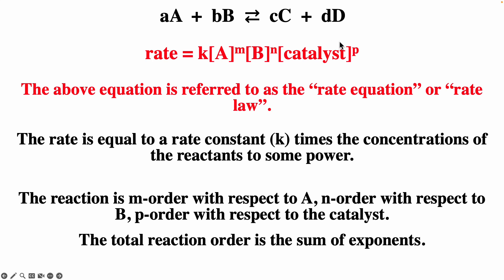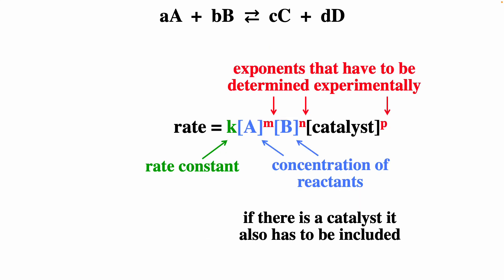The sum of the exponents gives you the overall order. So if M equals 1, we'd say first order with respect to A; if N equals 2, second order with respect to B. The rate equation — or rate law, the two terms are used interchangeably — has the rate constant times the concentration of the reactants to some power, and a catalyst if present. Those exponents have to be determined experimentally.